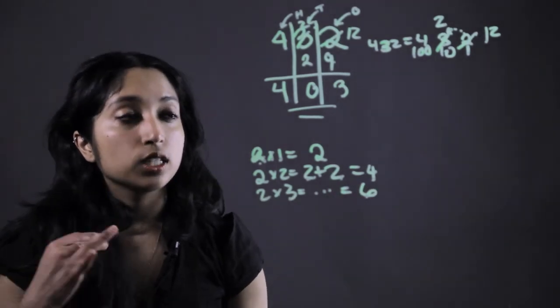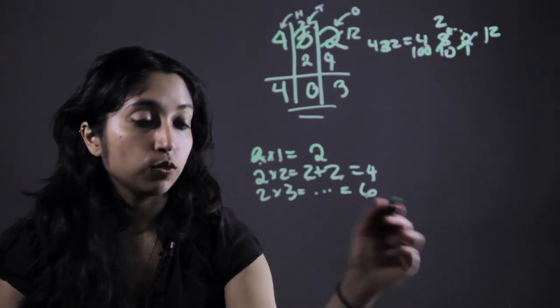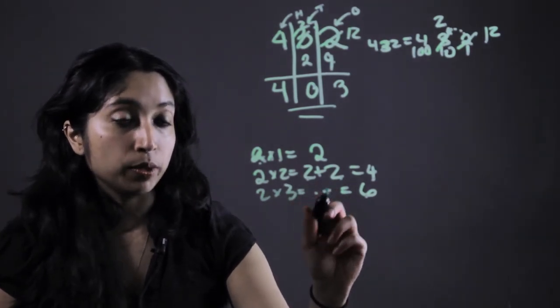And what we really want to focus on is memorizing those multiplication tables. So 2 times 3 is 6. 2 times 4 is 8 without having to add them up individually.